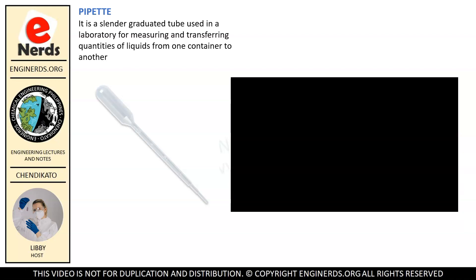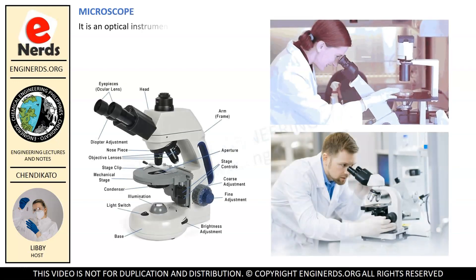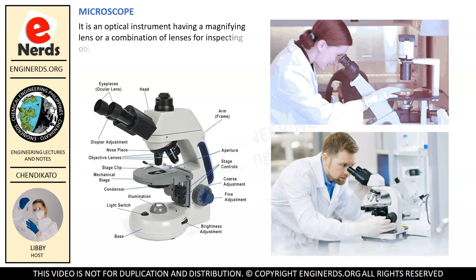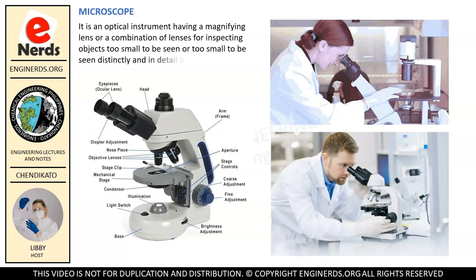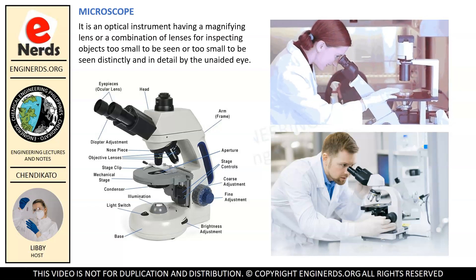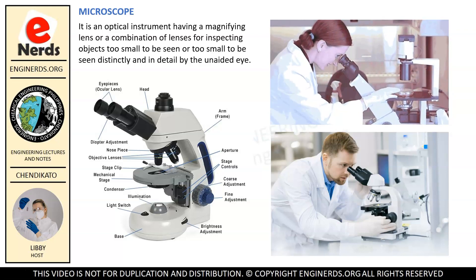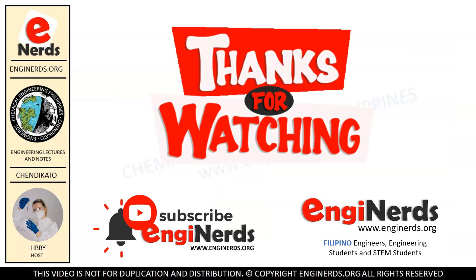Now we have the microscope, which of course you probably already know. It is an optical instrument having a magnifying lens or a combination of lenses for inspecting objects too small to be seen or too small to be seen distinctly and in detail by the unaided eye.